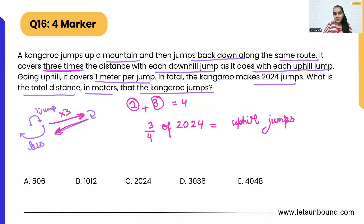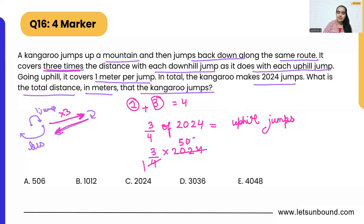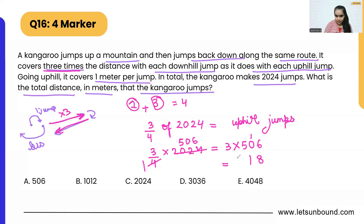Since it takes three times as many jumps going uphill, let's calculate three-fourths of 2024. We know 4 × 506 = 2024, so three times 506 gives us 1518 jumps. These are the total number of uphill jumps the kangaroo makes.